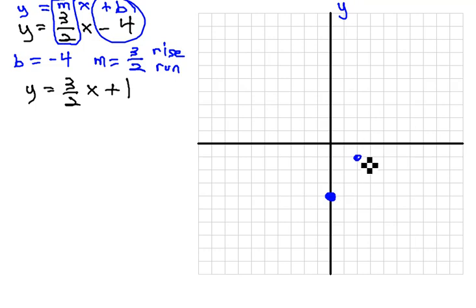So I'll rise 3, run 2, rise 3, run 2, rise 3, run 2. Follow that out each direction and that's going to give me my line. Let me make that a little bit better so it actually goes through my dots. There we go.